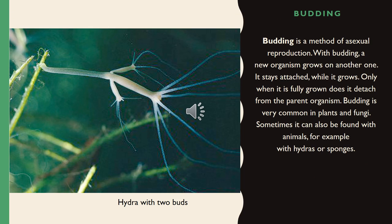Budding is a method of asexual reproduction. With budding, a new organism grows on another one. It stays attached while it grows, and only when it is fully grown does it detach from the parent organism. Budding is very common in plants and fungi, and can sometimes also be found in animals, for example hydra or sponges.